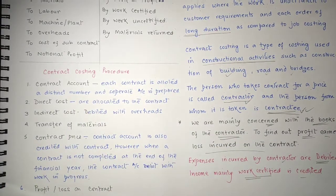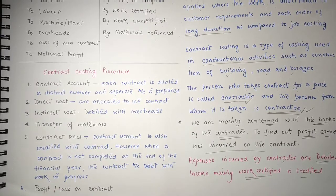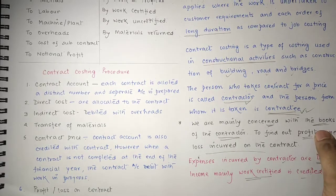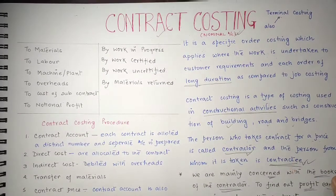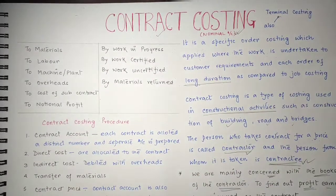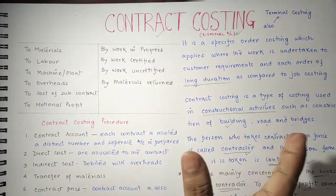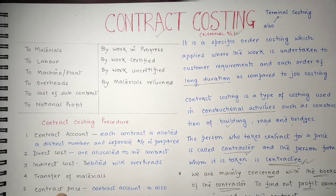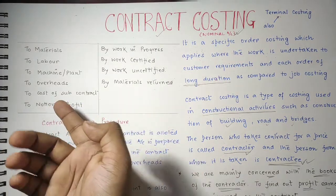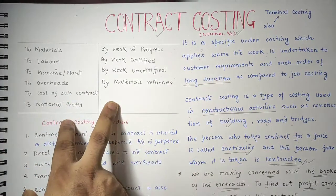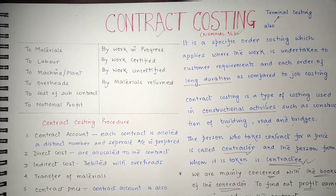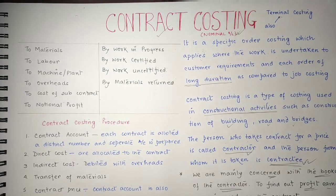Finally, we arrive at the profit and loss on contract, which we find out from the contract account at the end of each year. So we have discussed contract costing today — it is similar to job costing, but the most important difference is the long duration and a specific format for preparing the contract costing. I hope you liked this video; kindly subscribe to my channel and I'll be back tomorrow with another video.